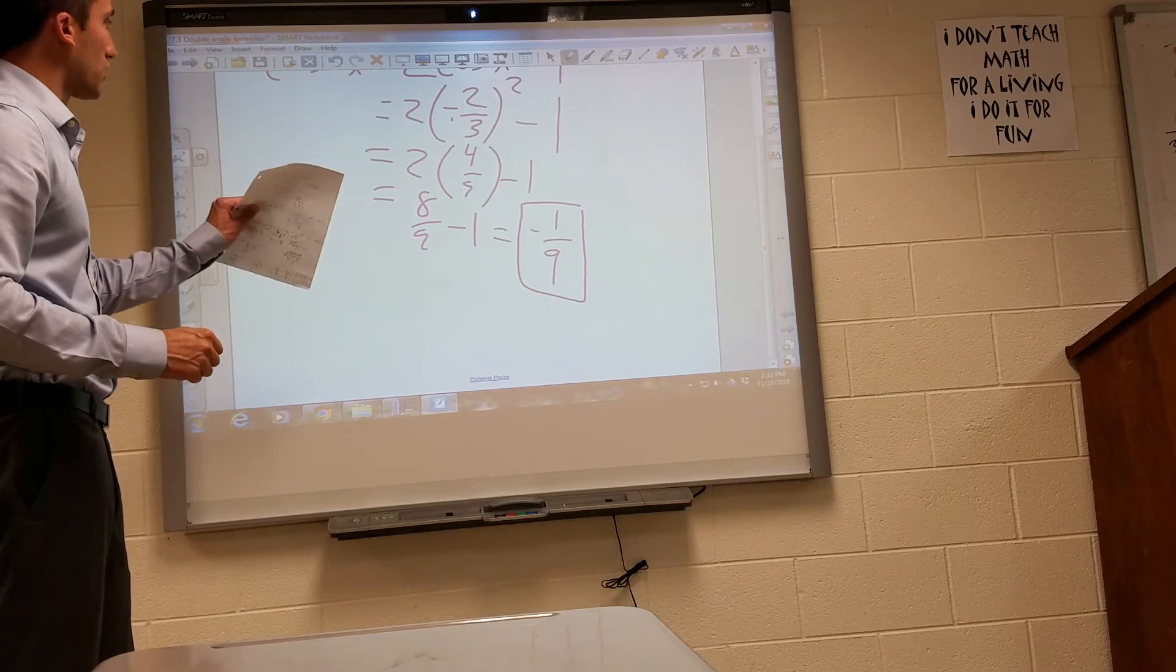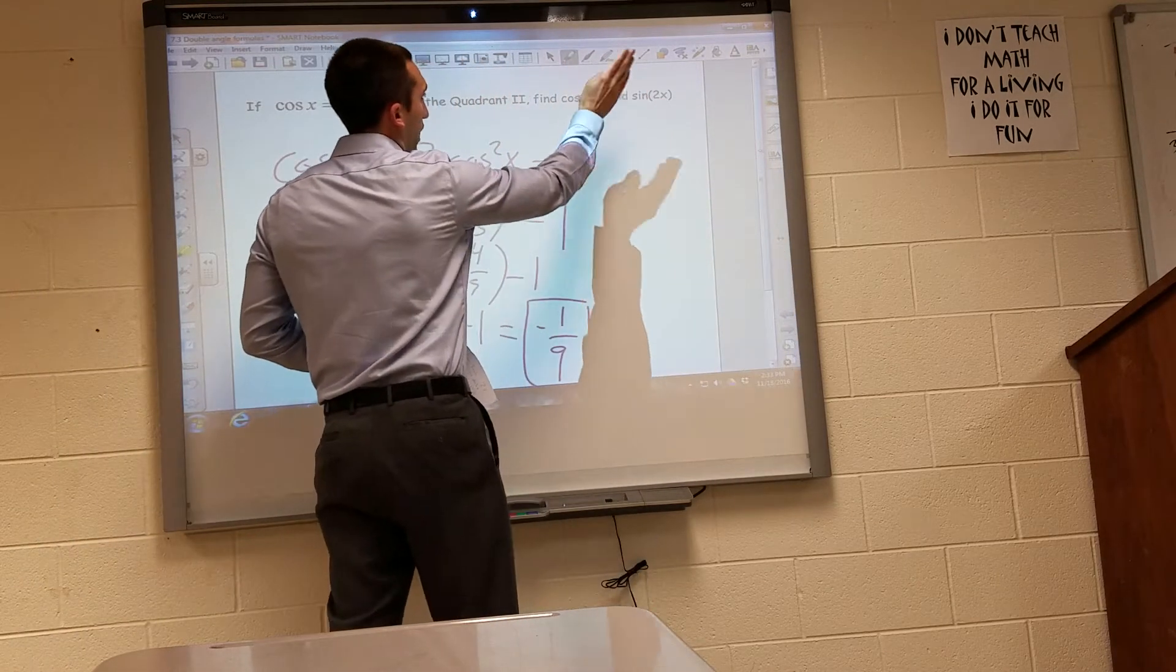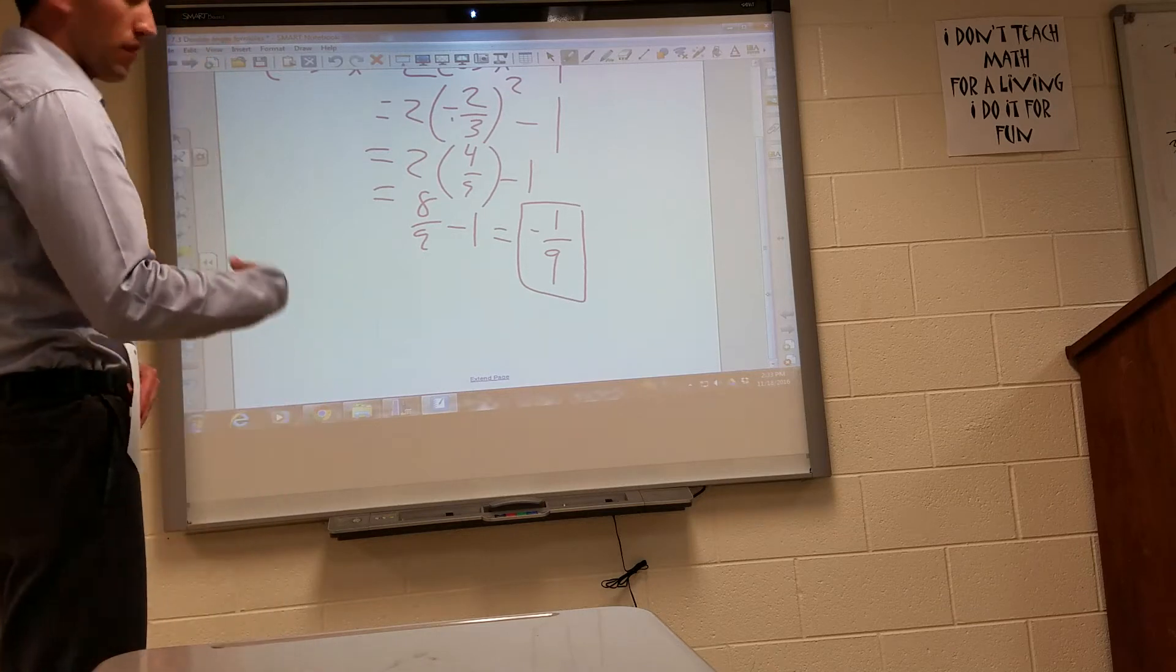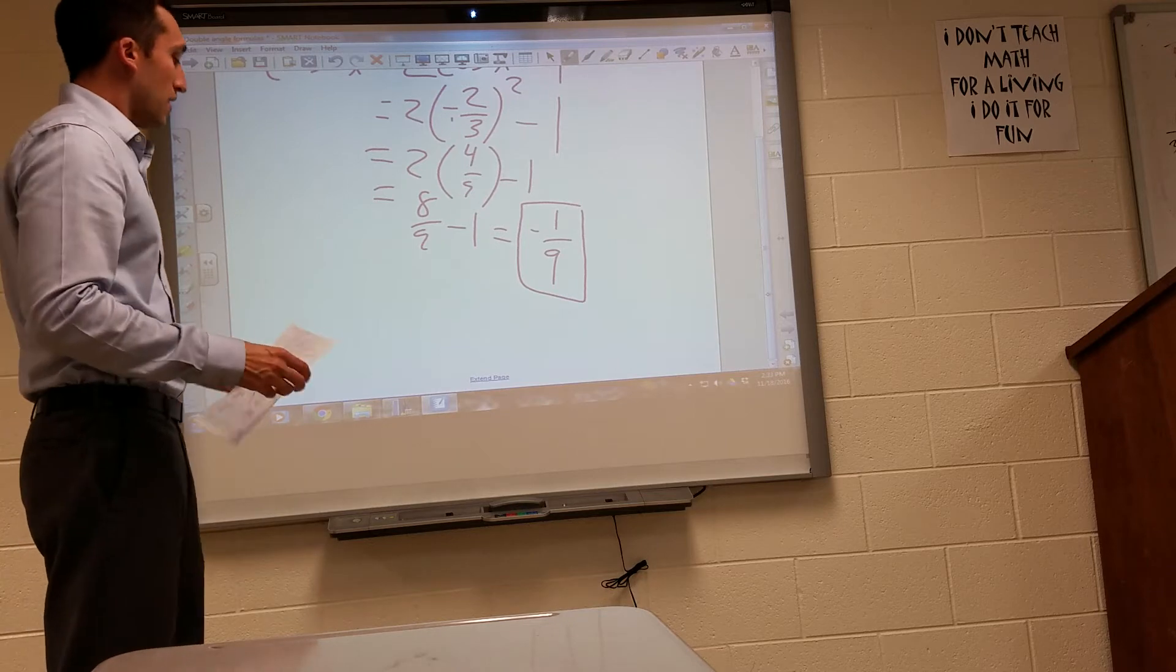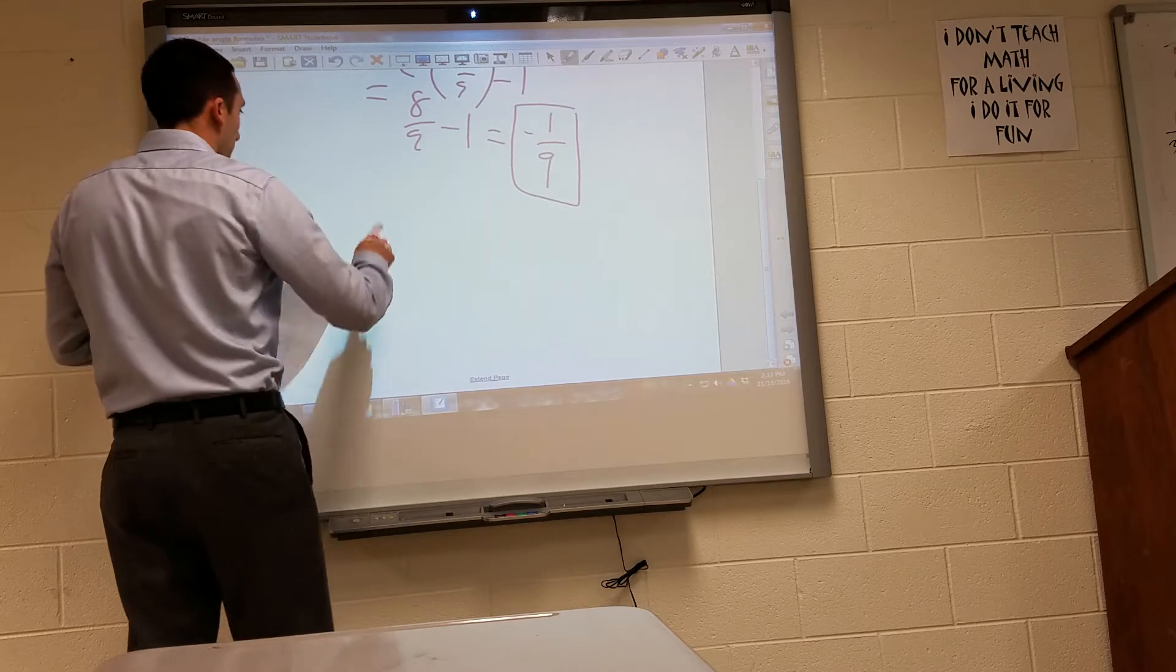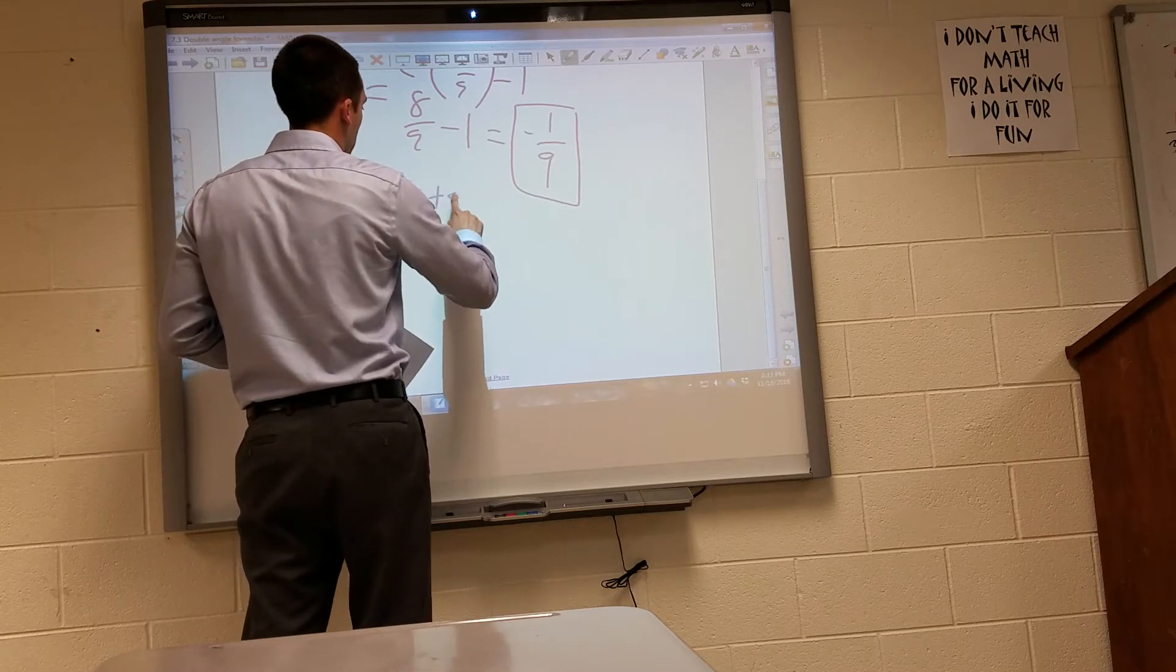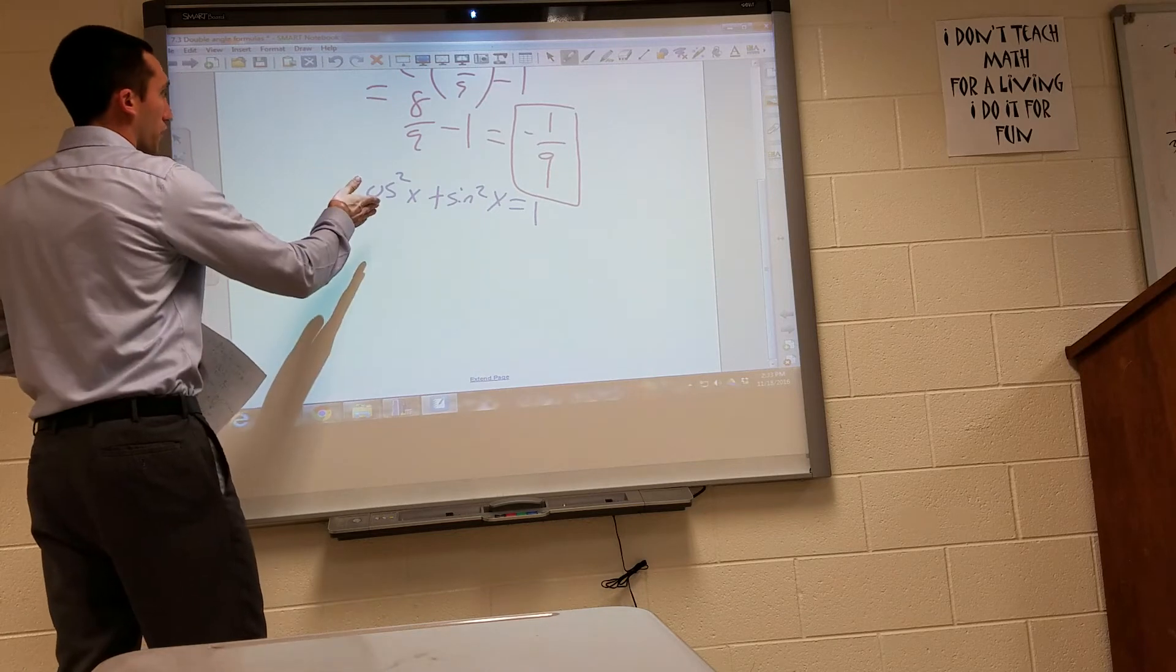So that is our cosine of 2x. They wanted us to find our cosine of 2x, and they wanted us to find our sine of 2x. But in order to find sine of 2x, I have to find sine of x. So those Pythagorean identities haven't gone away. We still need them from chapter 5. And so, to find sine of x, we have cosine squared of x plus sine squared x equals 1.